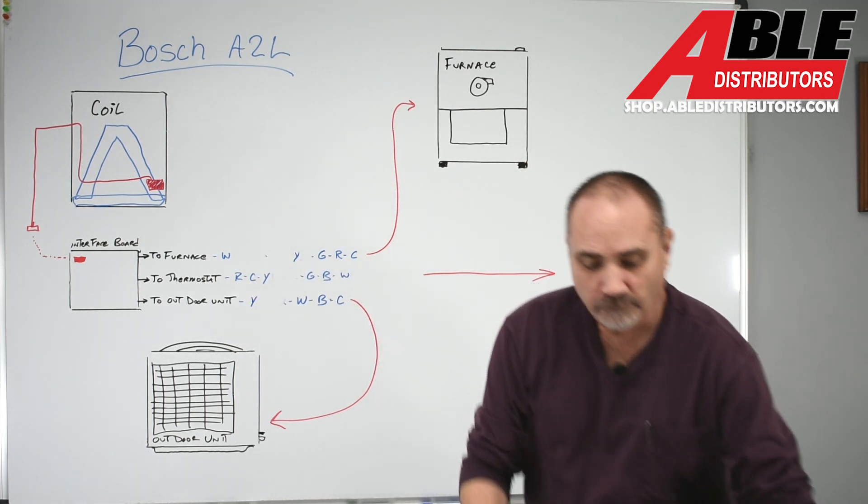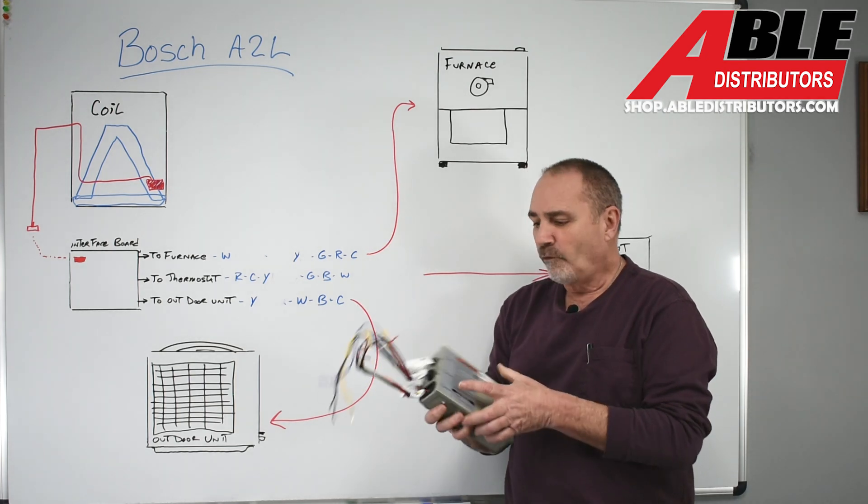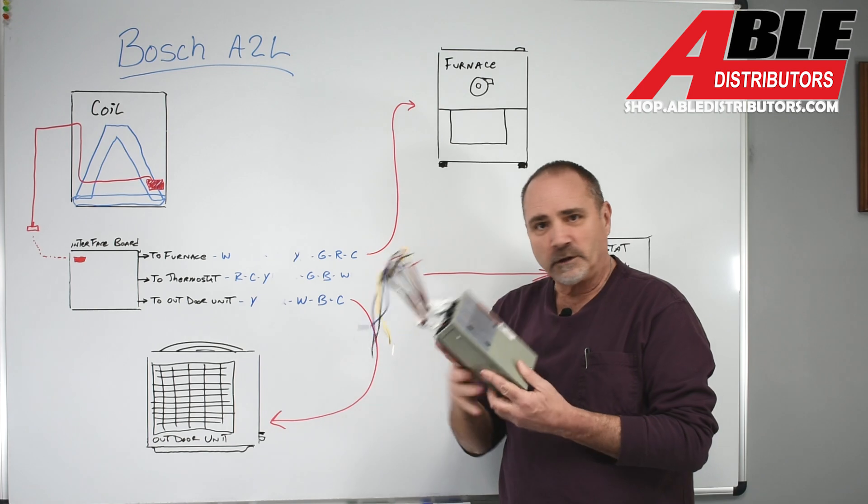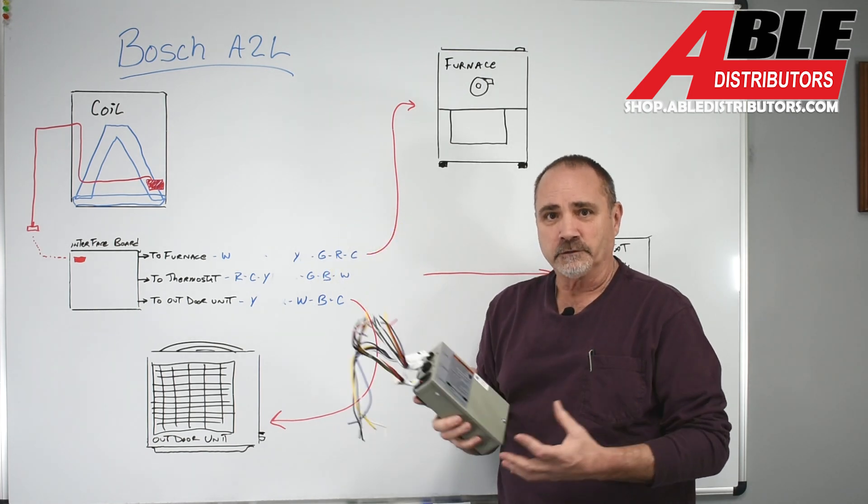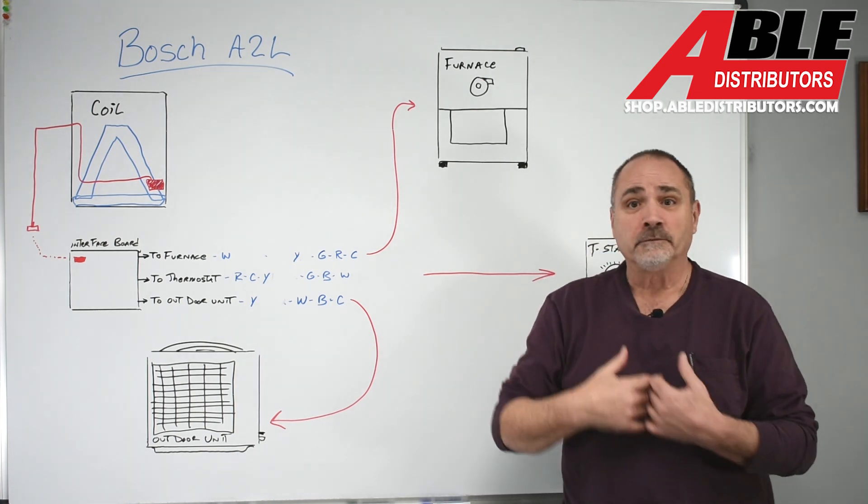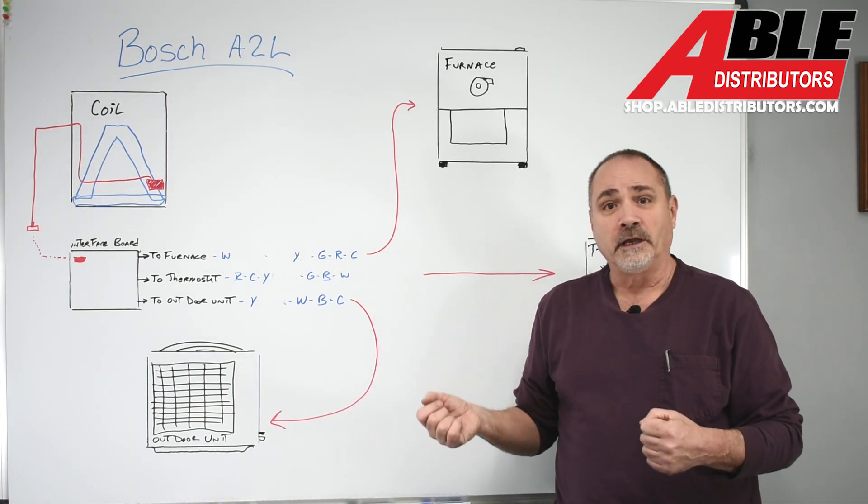But just know that they put the forethought in to make it so you have connections for whatever you're going to put this with, you're covered. And that's it on the control panel, the interface board, the control board, whatever you want to call it, for the Bosch A2L coil and sensor.